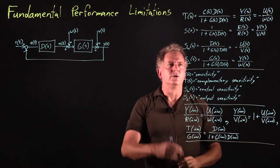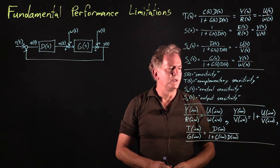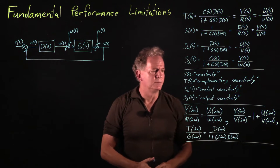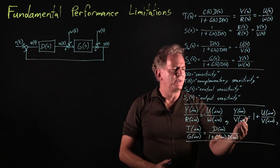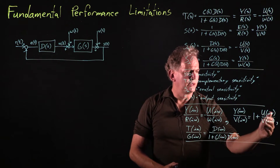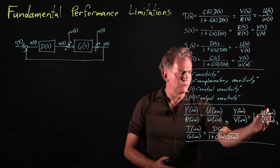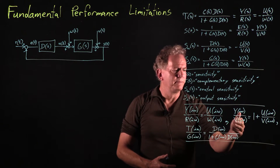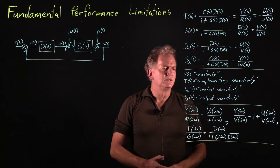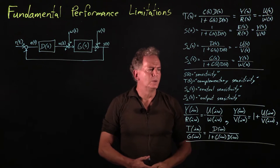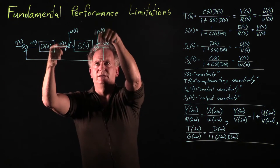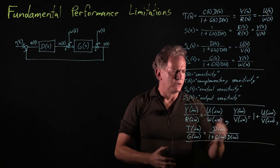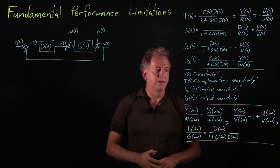Looking at the other sensitivities, since the complementary sensitivity and the sensitivity are related in a simple way, plugging in S equals i omega we see that the transfer function from V to Y and from V to U are related. We can't simultaneously get the response of Y to V to be small and the response of U to V to be small. One of these is one plus the other. We would like the control input U not to respond to measurement noise and we'd like the output Y not to respond to noise, but we can't have both because one is one plus the other.